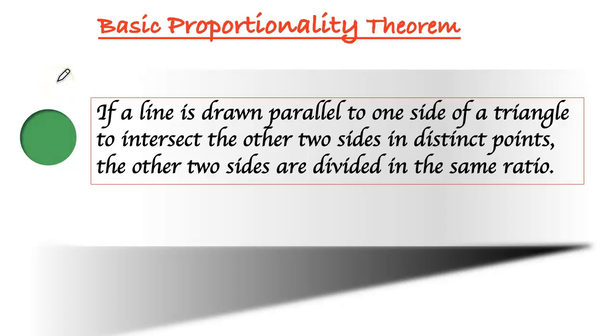If a line is drawn parallel to one side of a triangle to intersect the other two sides in distinct points, the other two sides are divided in the same ratio.